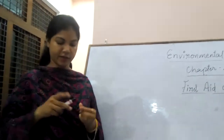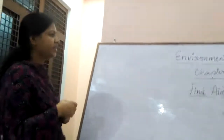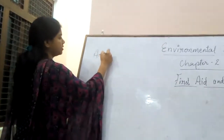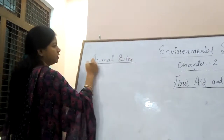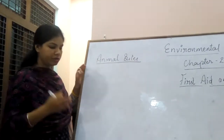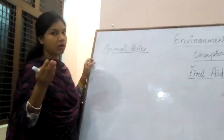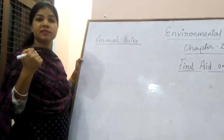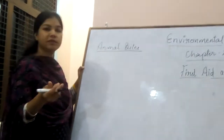Hello students. As we have completed most of this chapter, the next topic we are going to discuss is animal bites. In this topic we will cover three types of bites: first, animal bites like dog, horse, or any animal; second, insect bites like bees and honey bees; and third, snake bites. So let's talk about animal bites.